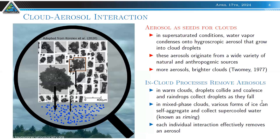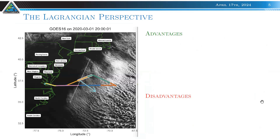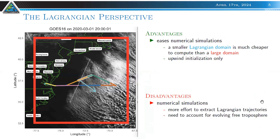We've chosen the Lagrangian perspective. Rather than simulating a giant box at the highest resolution, which would be very expensive, it's much cheaper to have a smaller box — order 20 to 50 kilometers squared, sometimes up to 100 kilometers — and move it with the boundary layer wind speed. All forcing conditions change as a function of time: for example, the underlying sea surface temperature changes as the simulation continues.